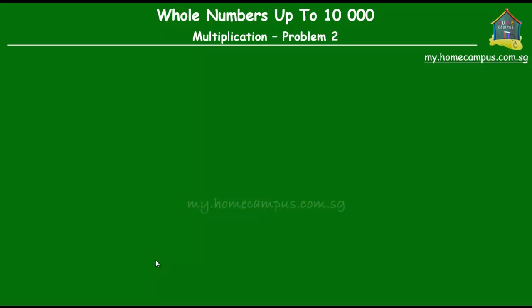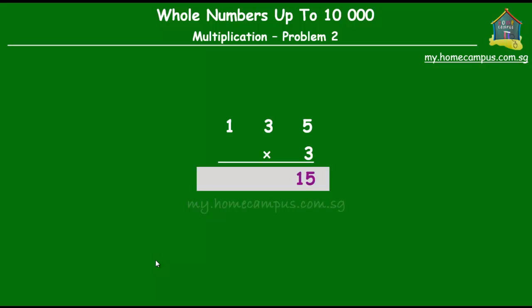Let's look at the steps one more time. 135 times 3: the first step is to multiply the ones by 3. So 5 ones times 3 is 15 — we keep the 5 in the ones place and carry the 1 to the tens place. Next, we multiply the tens by 3. There are 3 tens; 3 tens times 3 gives us 9 tens. We add the 1 from the previous step to get 10 tens. We can only have one digit in the tens column, so we keep the 0 in the tens column and carry the 1 to the hundreds column.